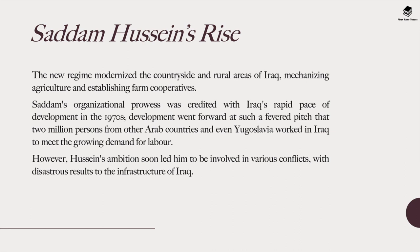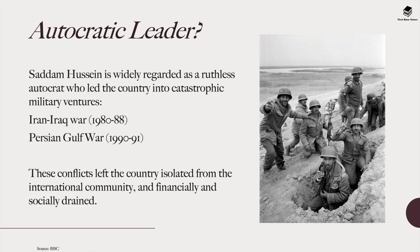However, Hussein's ambitions soon led him to be involved in various conflicts with disastrous results to Iraq's infrastructure. He was widely regarded as a very ruthless autocrat who led the country into catastrophic military campaigns: the first was the Iran-Iraq war from 1980 to 1988, and the second was the Persian Gulf war from 1990 to 1991. These conflicts left Iraq isolated from the international community and financially and socially drained.